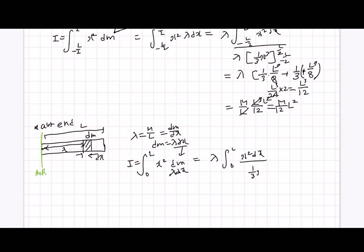And this equals x cubed over 3 evaluated from L to 0. And if you substitute this, you would have L cubed over 3. And therefore, because lambda equals m over L, this I will equal 1 over 3 mL squared.